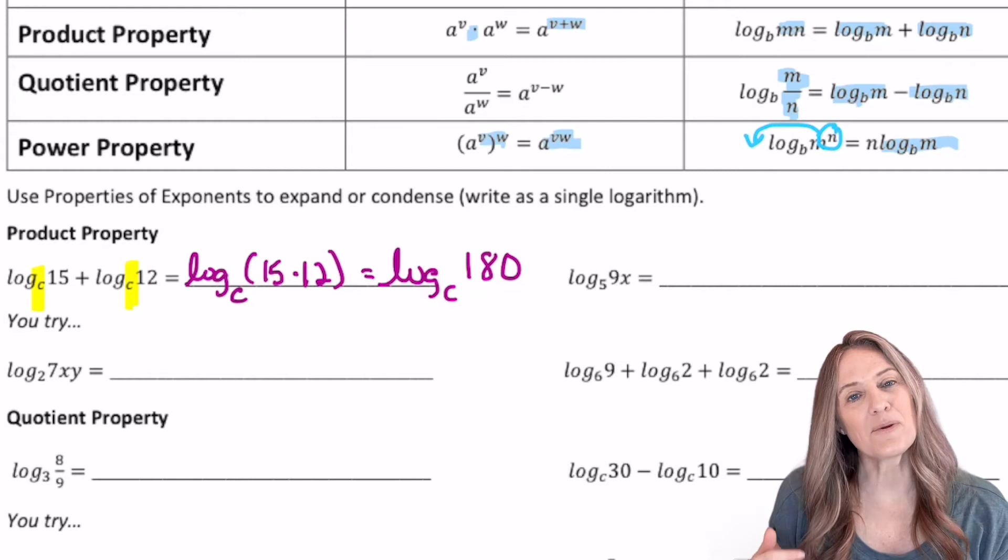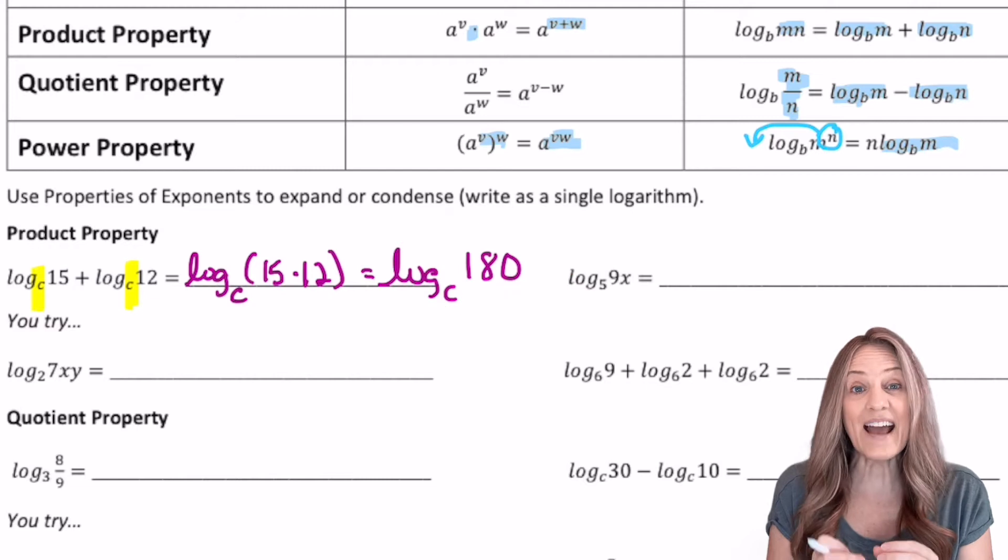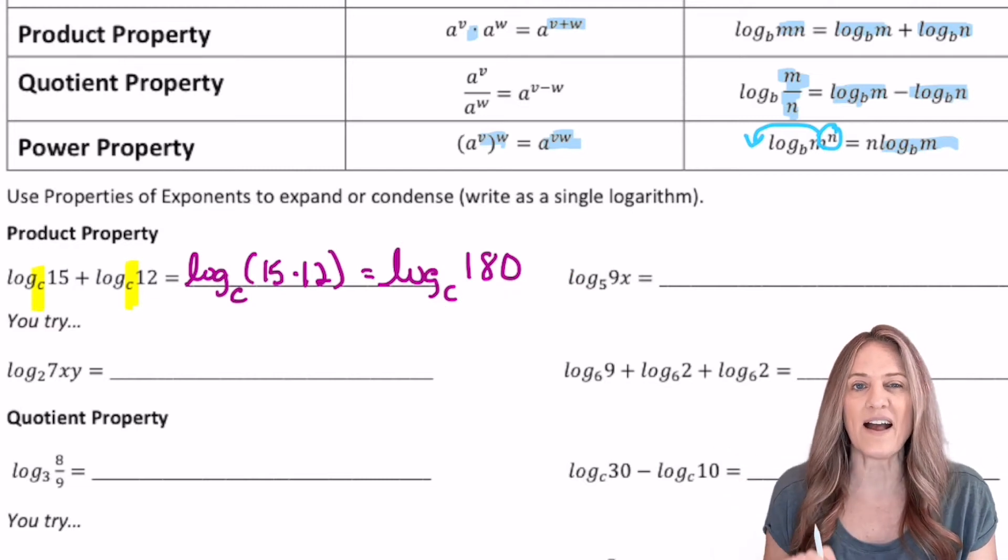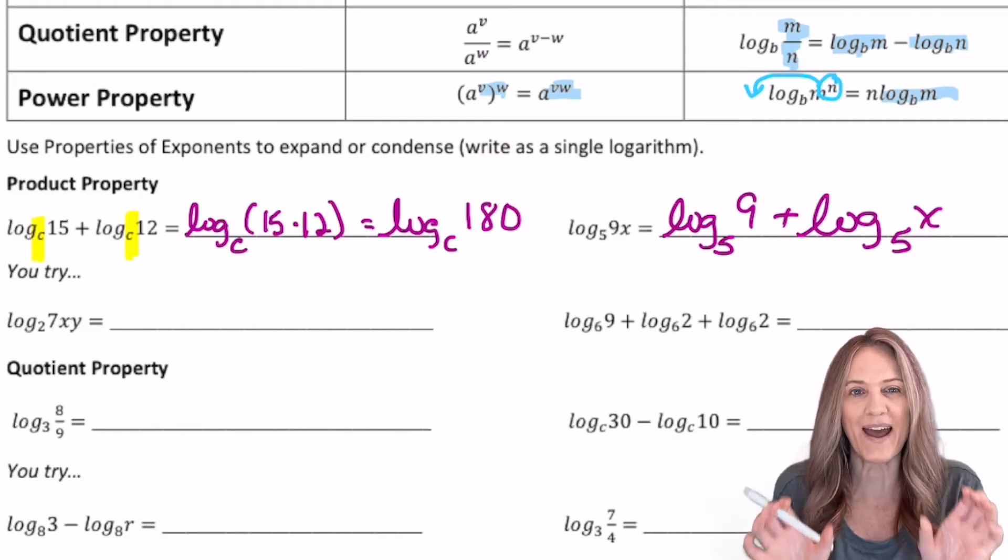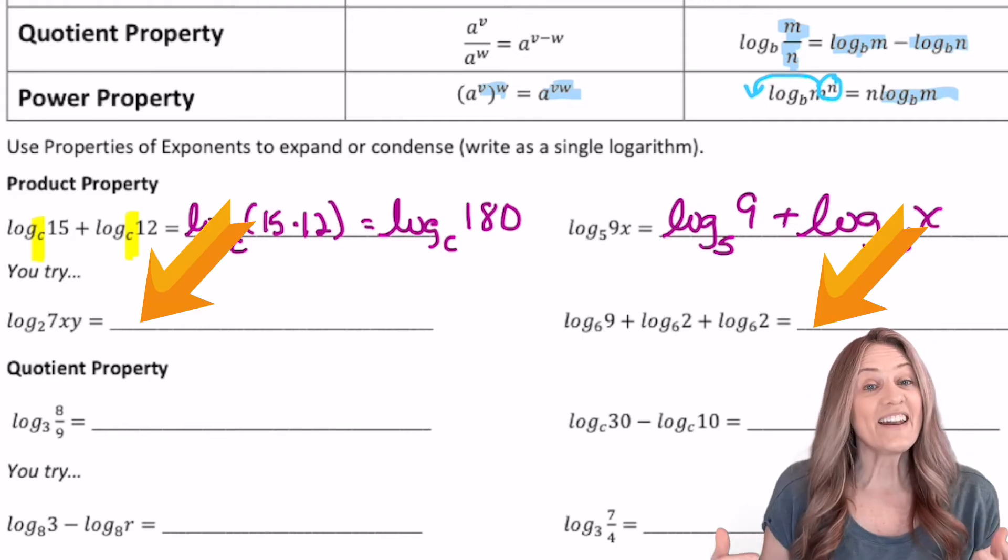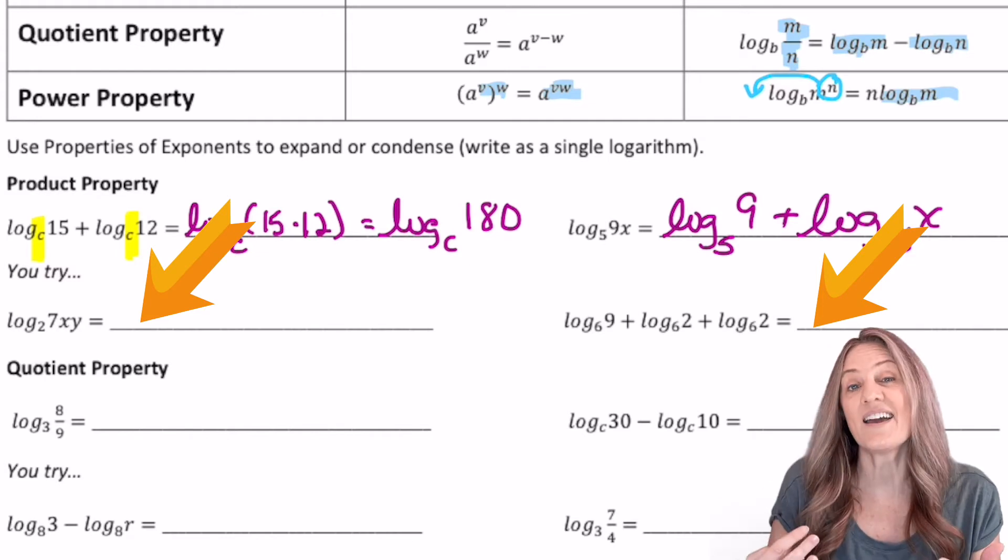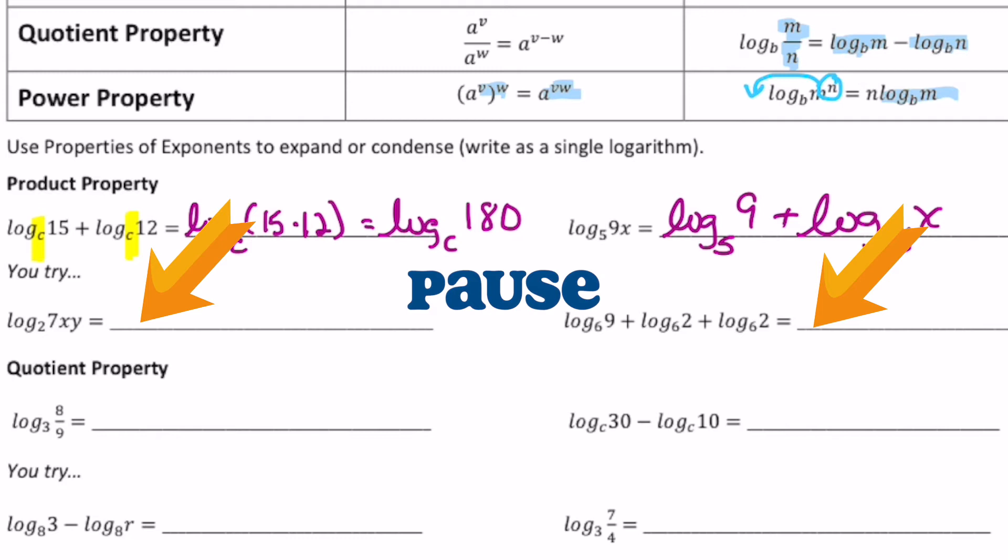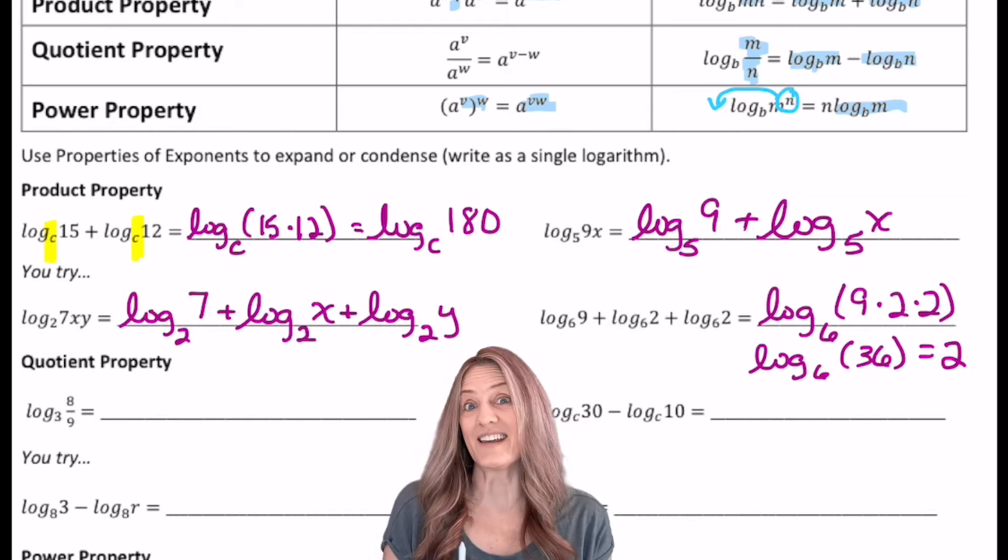We've used the logarithmic product property to condense a logarithmic statement. Now let's use it to expand a logarithmic statement. So I have log base 5 of 9 times x. I know that I can separate that into adding the two exponents. Your turn. On that next one, there's three things being multiplied. We can apply the logarithmic properties repeatedly. How did you do?